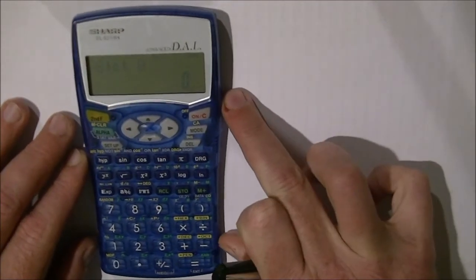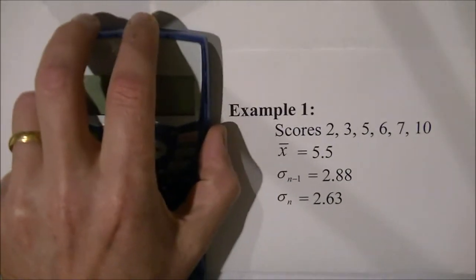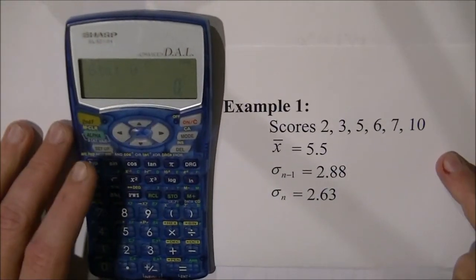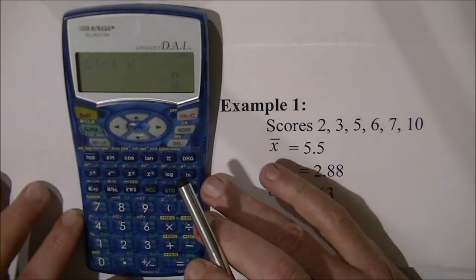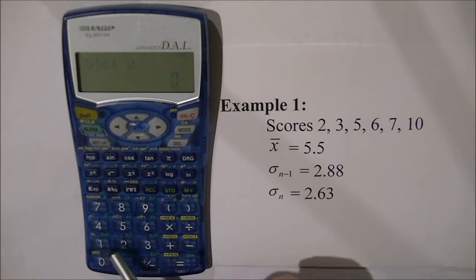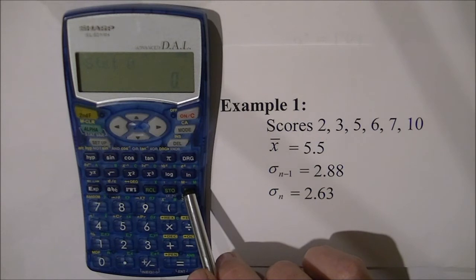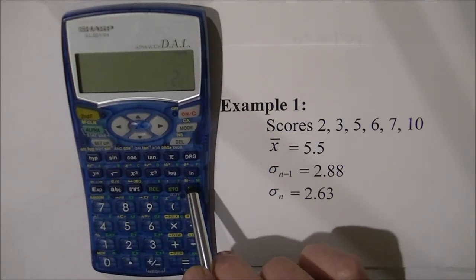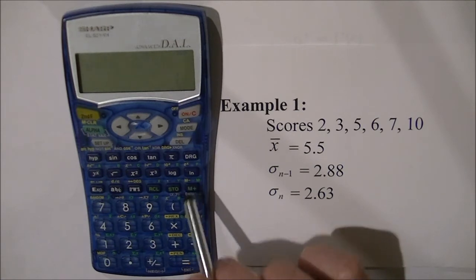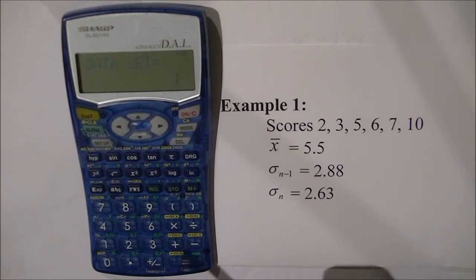Now I'm going to show you how to enter some scores into the calculator and I've got two examples. This first example is just inputting individual single scores into your calculator. So to do this what you'll need is obviously the numbers to enter those scores in as well as the M plus button which is located just here on the right hand side it's in green. So we're going to put in the score 2 and then M plus and you'll notice it says data set equals 1 so it's indicating you've entered one piece of data.